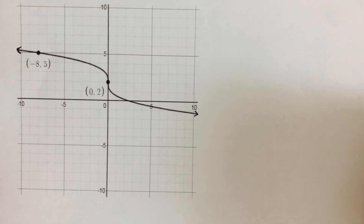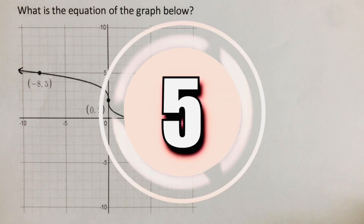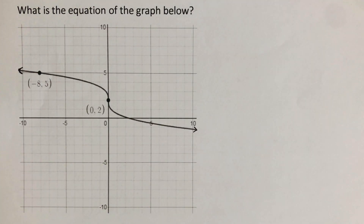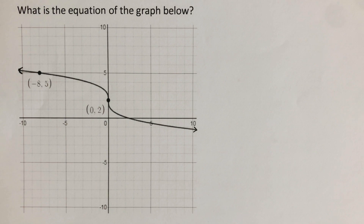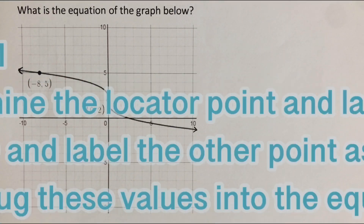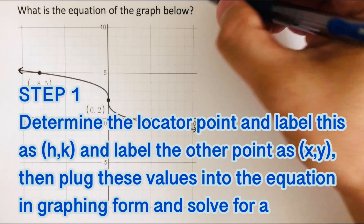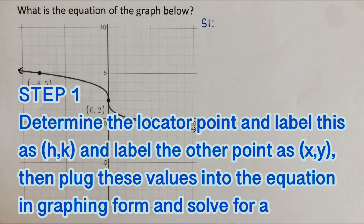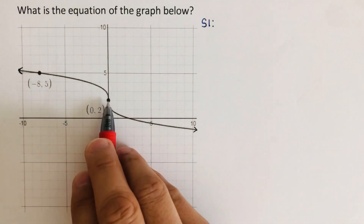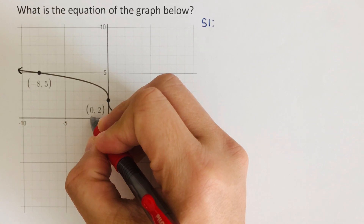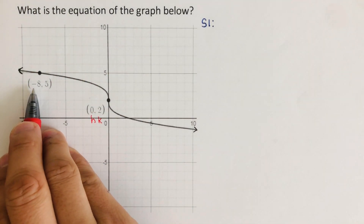Pause this video and try the next problem on your own, then check your answer. This second example is similar to the first, but now we are given a graph and must determine the vertex and a point from it in order to find the equation. The first step is again to determine the locator point, label it as h,k, and label the other point as x,y, then plug these values into the equation in graphing form and solve for a. I'll label the vertex as h,k and the other point as x,y.